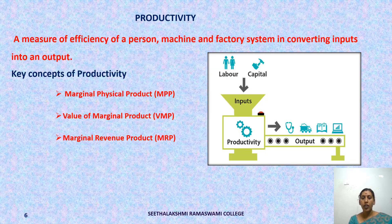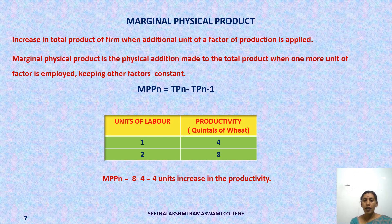The concept of productivity plays a very important role in understanding the marginal productivity theory of distribution. Productivity is the measure of efficiency of a person, machine, and factor system in converting inputs into output. The key concepts of productivity are marginal physical product, value of marginal product, and marginal revenue product. The main factors of production are labor and capital, which are used as inputs and converted into final output through the process of productivity.